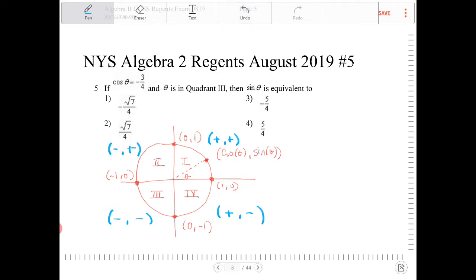Since cosine theta equals negative three-fourths, cosine will be negative in two quadrants only—quadrants two and three. The problem says theta is in quadrant three, so that's consistent. The question now is asking, then sine theta is equivalent to what value?